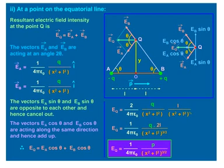The electric field at point Q due to the plus Q charge is EB, and it equals Q upon 4 pi epsilon 0 times (X squared plus L squared), directed along BQ. Similarly, the electric field at point Q due to the minus Q charge is EA, and it mathematically equals Q upon 4 pi epsilon 0 times (X squared plus L squared), directed along QA.